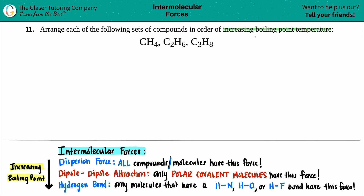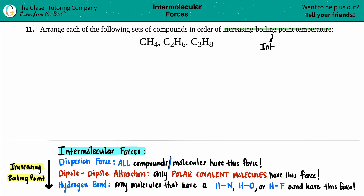Whenever we're trying to rank molecules, especially covalent molecules — ones that are just all non-metals — if we want to rank them by increasing boiling point, what they're really asking is to identify your intermolecular forces. Because the more intermolecular forces a molecule has, the higher the boiling point. The only way to do this properly is to draw out the Lewis structure.